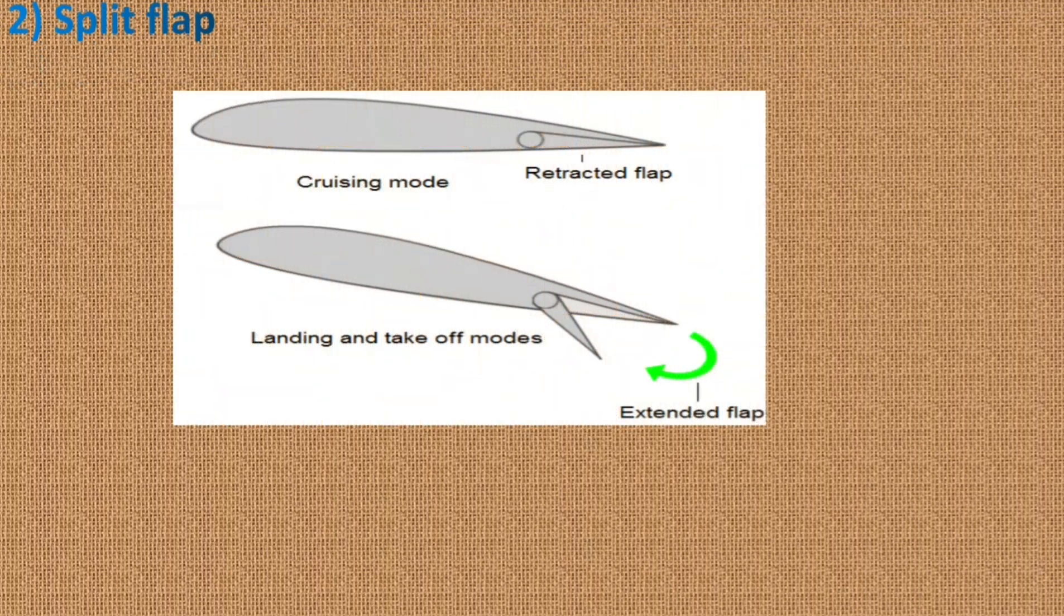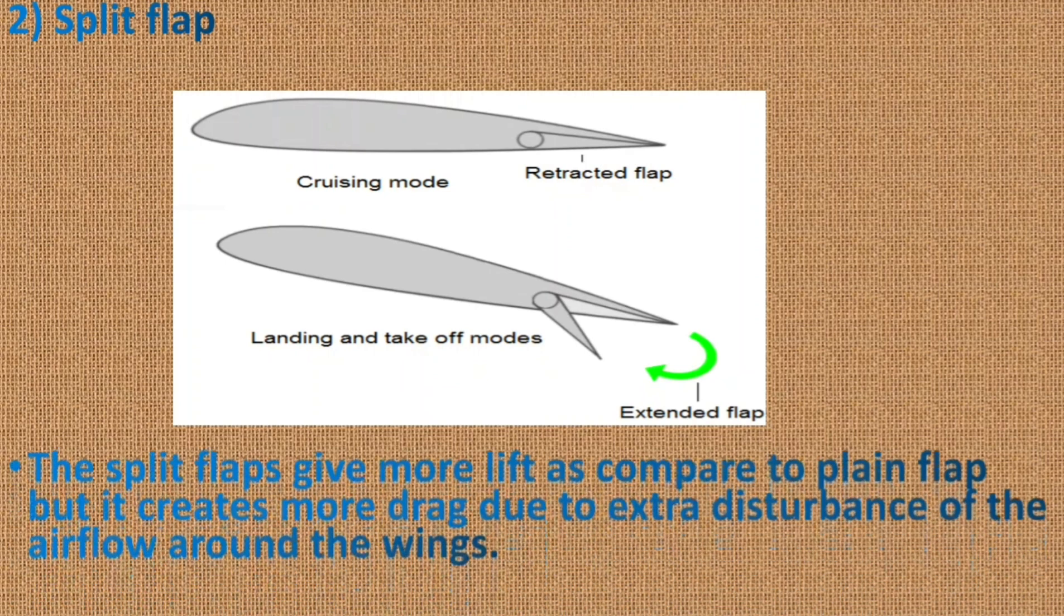Split flap. In split flap, the rear portion of the lower surface of the wing airfoil hinges downward from the leading edge of the flap while the upper surface remains immobile as you can see in this picture. The split flap gives more lift compared to plain flap but creates more drag due to extra disturbance of the airflow around the wings.